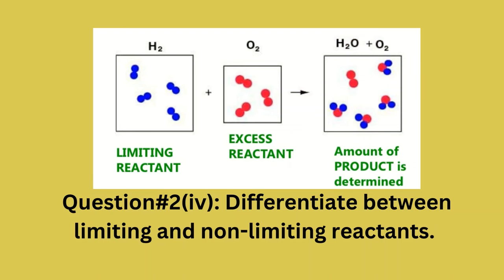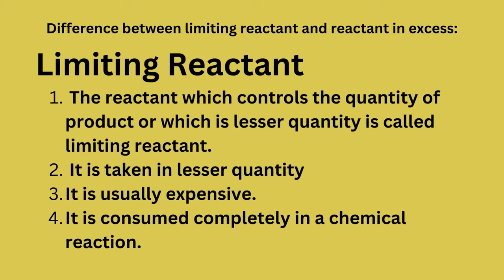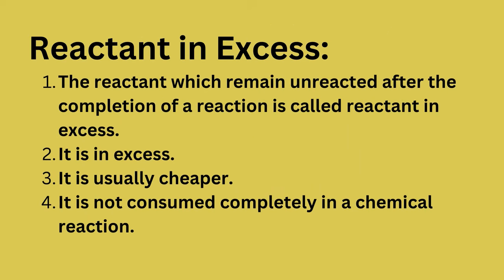Question number two, part four: differentiate between limiting and non-limiting reactants. Limiting reactant: the reactant which controls the quantity of product, or which is present in lesser quantity, is called the limiting reactant. It is taken in lesser quantity, is usually expensive, and is consumed completely in a chemical reaction. Reactant in excess: the reactant which remains unreacted after the completion of a reaction. It is in excess, usually cheaper, and is not consumed completely in a chemical reaction.